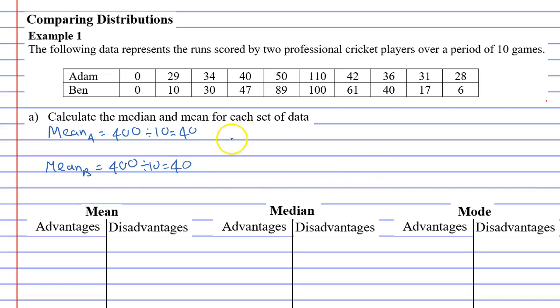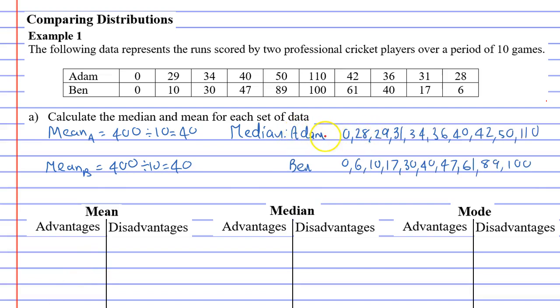Let's look at median now. Let's see if that's the same for Adam and for Ben. I'm going to pause because I need to write all the numbers in order. All right, so we have our numbers written in order.